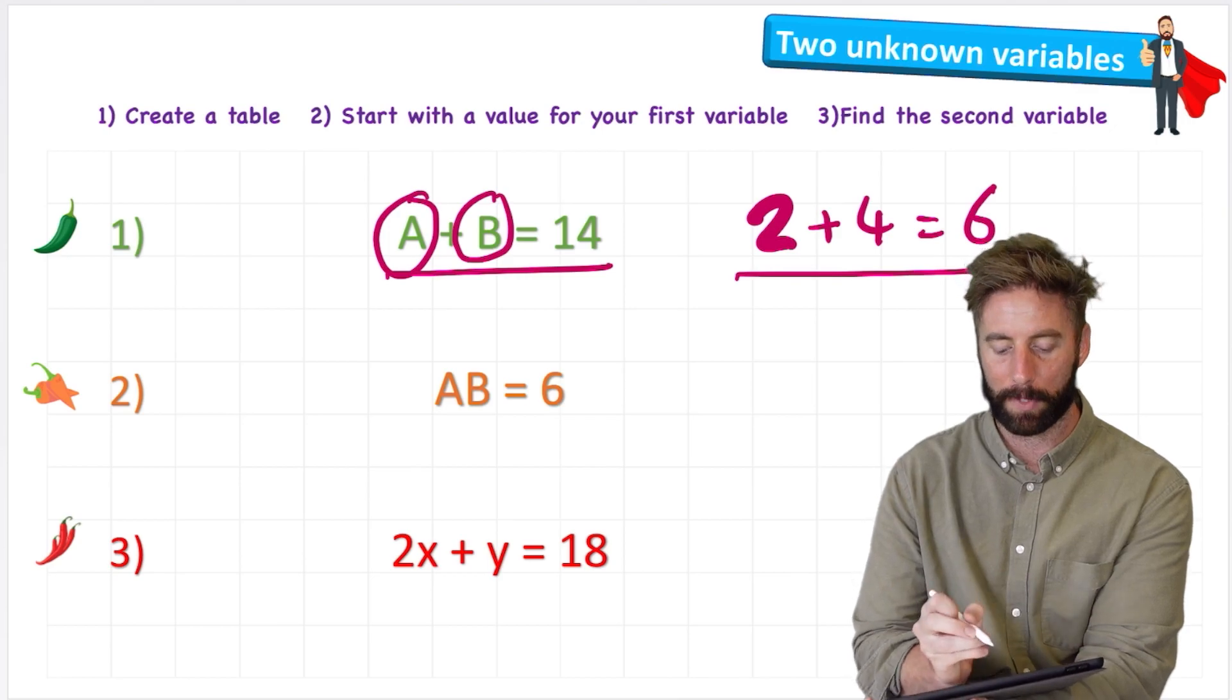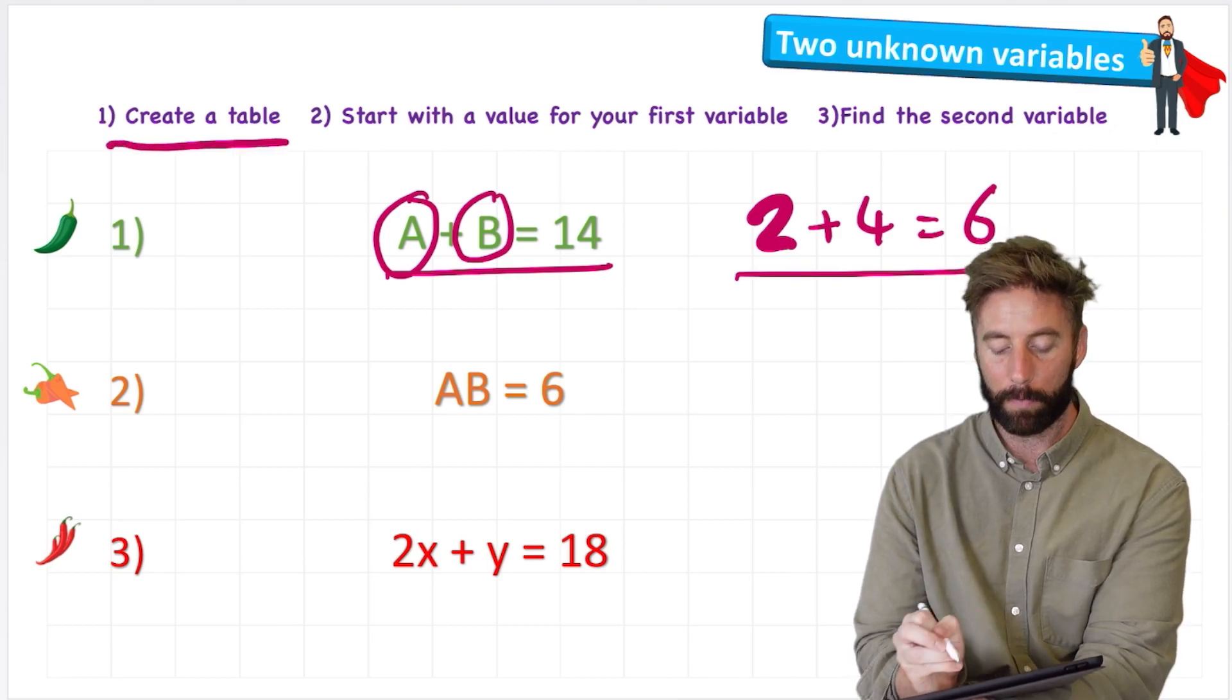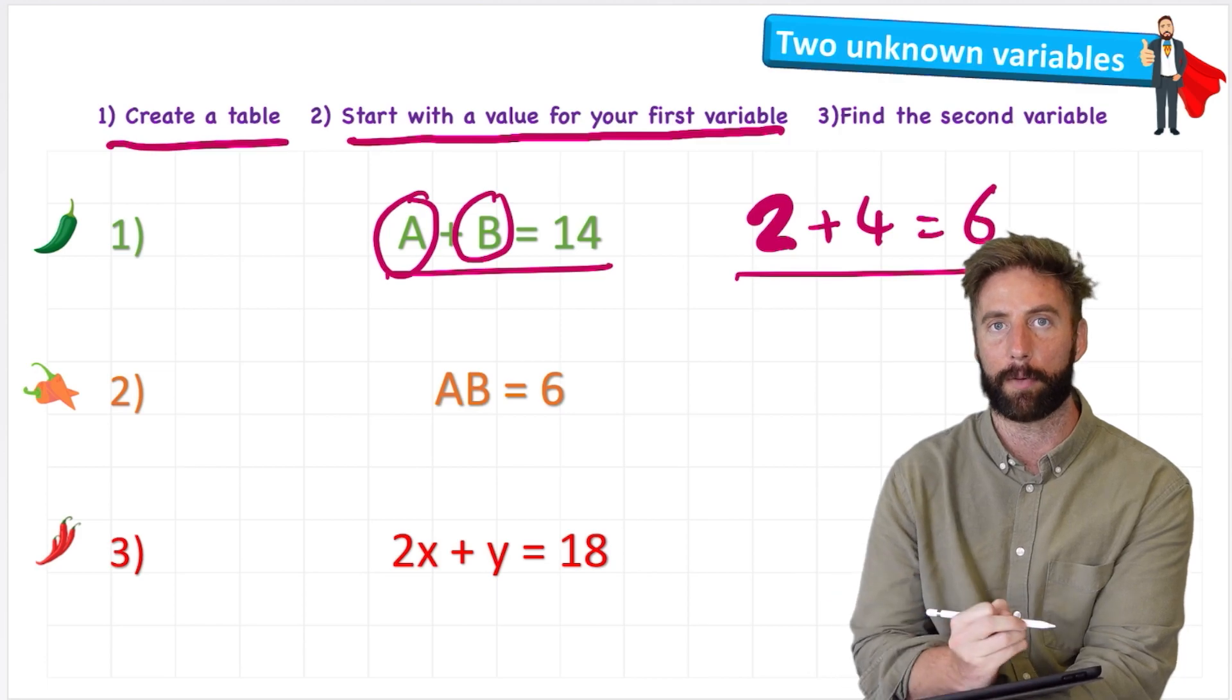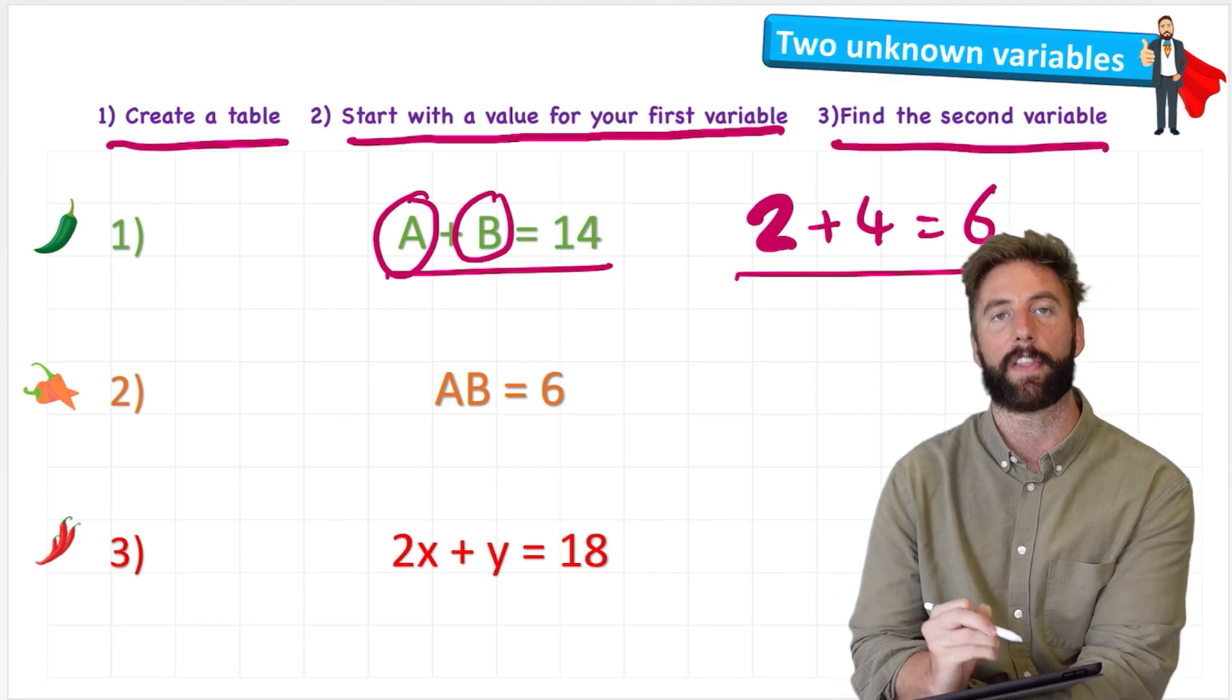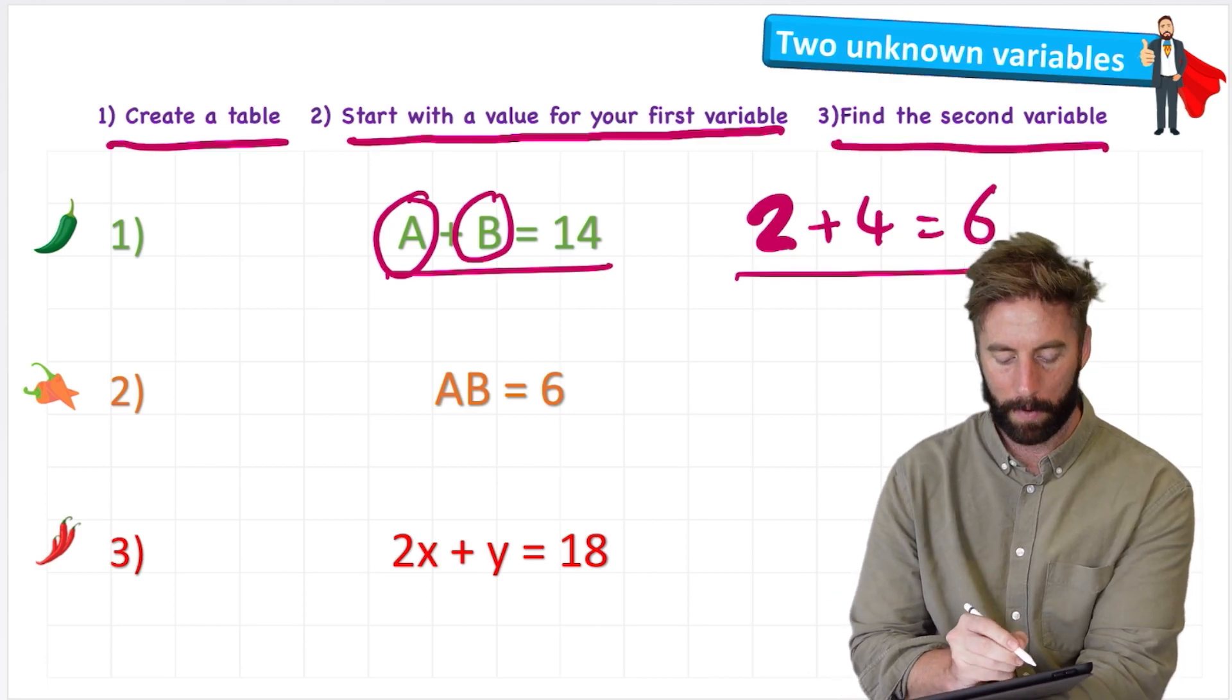So how do we go about finding the value of these variables in an algebraic equation? Well, we're going to do it by following these steps today. First we're going to create a table, then we're going to start with a value for our first variable, and then we're going to use that to find the second variable. Let's see what I mean with question one.